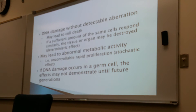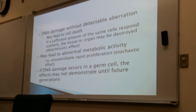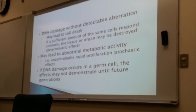DNA damage without detectable aberration may lead to cell death. If a sufficient amount of the same cells respond similarly, the tissue or organ may be destroyed — it's a snowball effect, happening at the cellular level and replicating until the tissue or organ itself dies. This may also lead to abnormal metabolic activity with uncontrollable rapid proliferation. If DNA damage occurs in a germ cell, the effects may not be demonstrated until future generations.